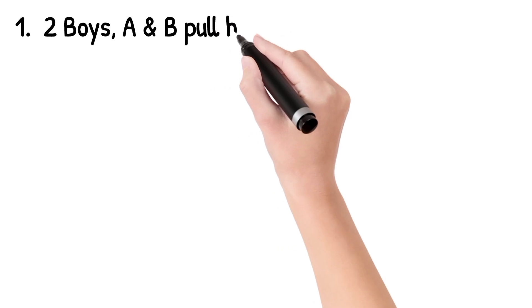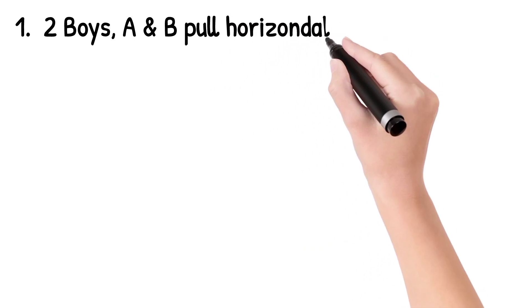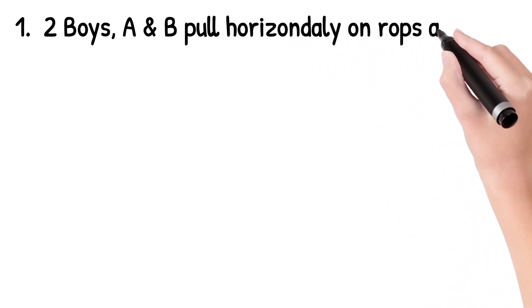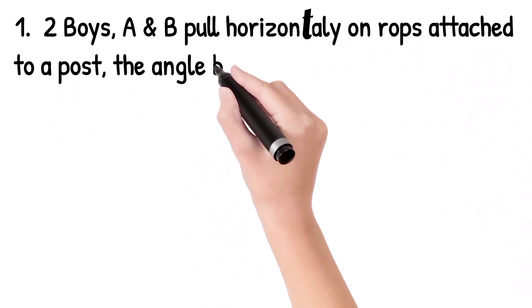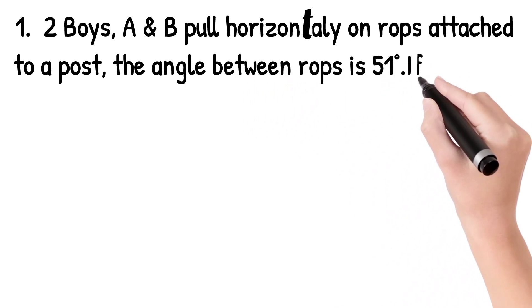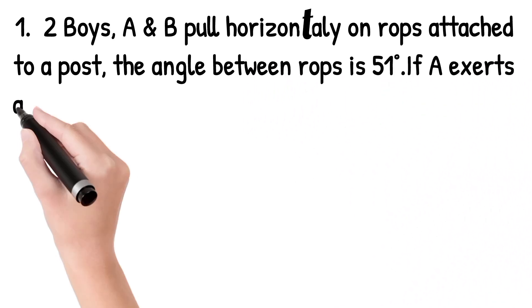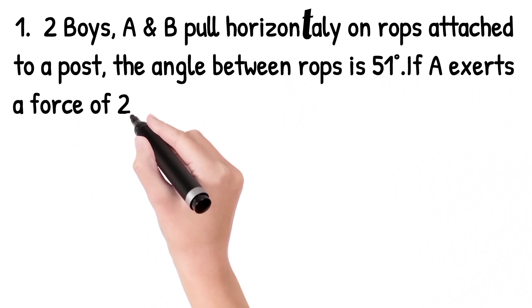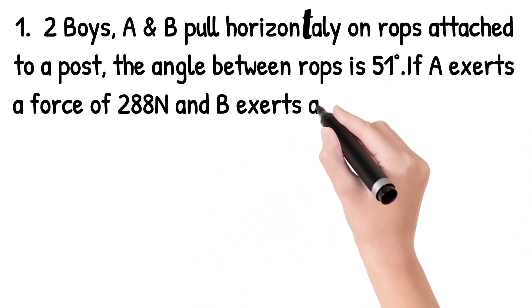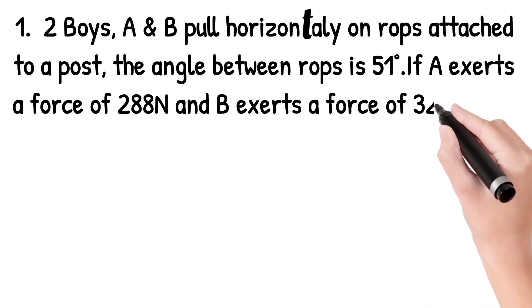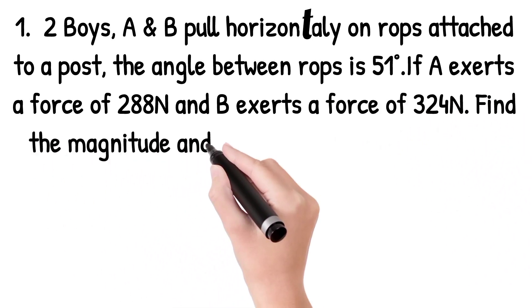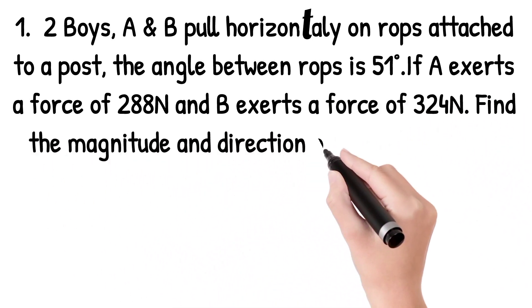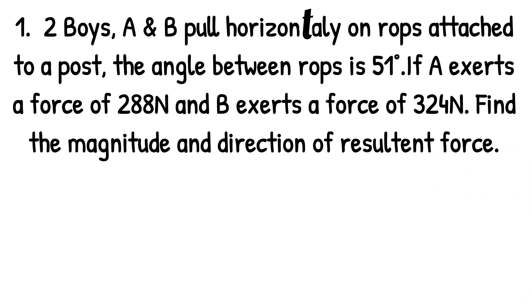Two boys A and B pull horizontally on ropes attached to a post. The angle between the ropes is 51 degrees. If A exerts a force of 288 newtons and B exerts a force of 324 newtons, find the magnitude and direction of the resultant force.